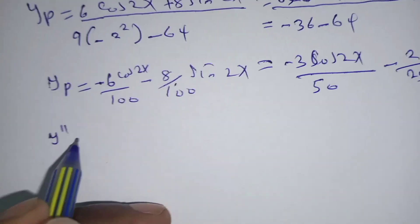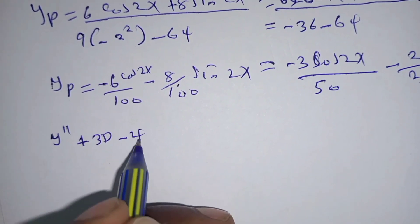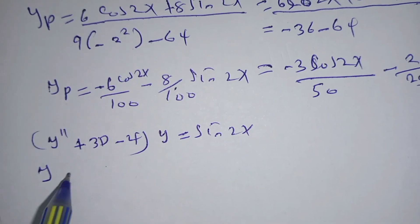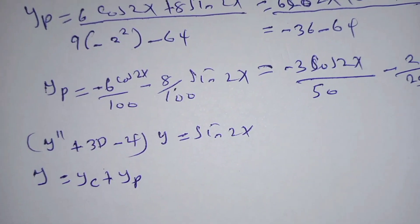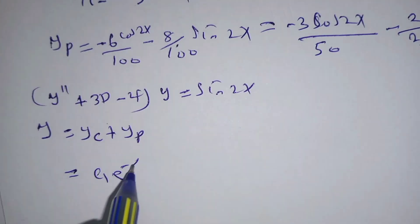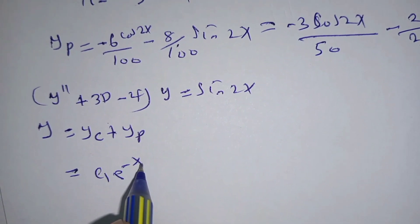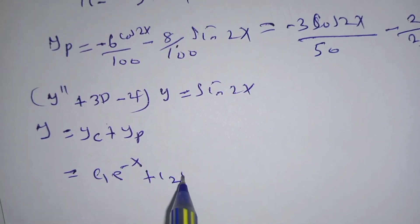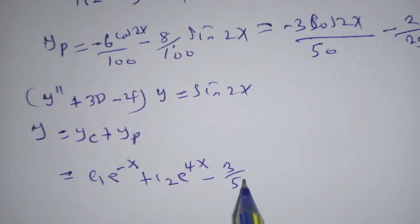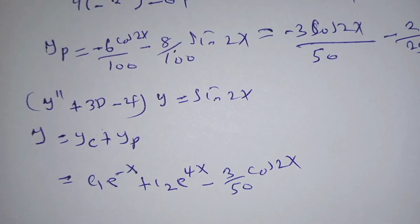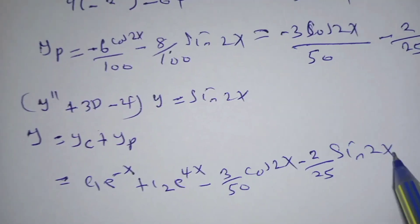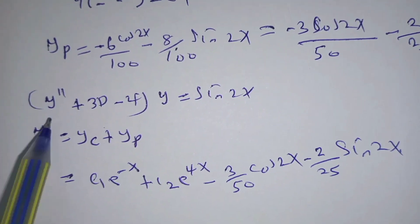Our ODE was y double prime plus 3y prime minus 4y equals sin(2x). The general solution is y equals yc plus yp, which gives us c1·e^(-x) plus c2·e^(4x) minus 3 over 50 cos(2x) minus 2 over 25 sin(2x). That is the solution obtained using the inverse D operator method.